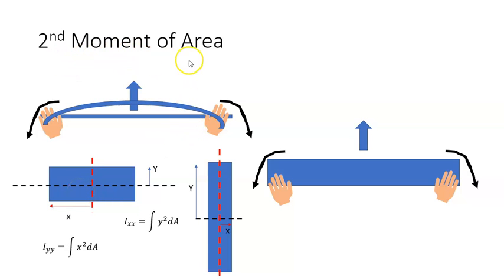So that's the second moment of area and it's an expression of how rigid, in this case, the ruler is or whatever the object is.